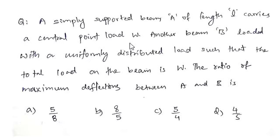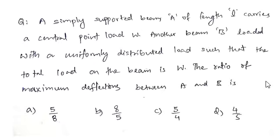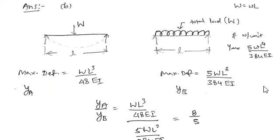Next question: a simply supported beam A of length L carries a central point load W, and another beam B is loaded with a uniformly distributed load such that the total load equals W. The ratio of maximum deflections of A to B is asked. Options: A 5/8, B 8/5, C 5/4, D 4/5. For a simply supported beam with a central point load, maximum deflection is WL³/(48EI).